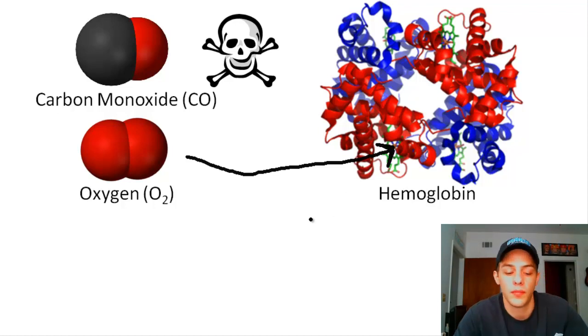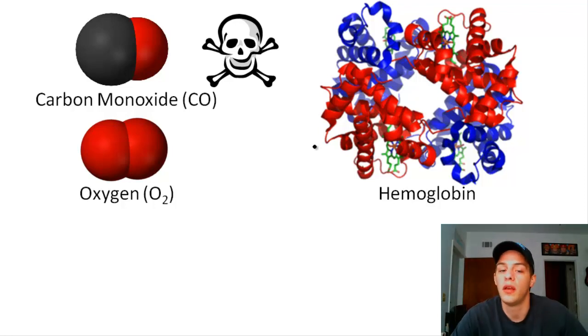And where carbon monoxide comes in is carbon monoxide actually binds to hemoglobin in that same spot more effectively than oxygen does. So when someone dies from carbon monoxide poisoning, they're not necessarily dying directly from the carbon monoxide. What they're dying from is the lack of oxygen that's going to their tissues, which is caused by carbon monoxide taking up too many of those binding sites in hemoglobin.